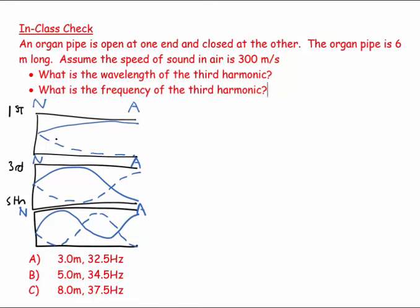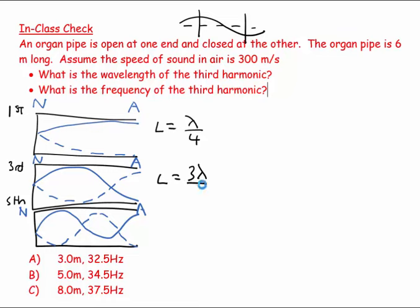You can kind of see this if I think about how much of a wave fits. This L is equal to a fourth of a wavelength, so this would be λ/4. And if the wave looks like the next pattern, L is equal to three λ over four. And if I look at the next one, I've got to do another wave in there. So the pattern is: one quarter, two quarters, three quarters, four quarters, five quarters — so L is equal to five λ over four.